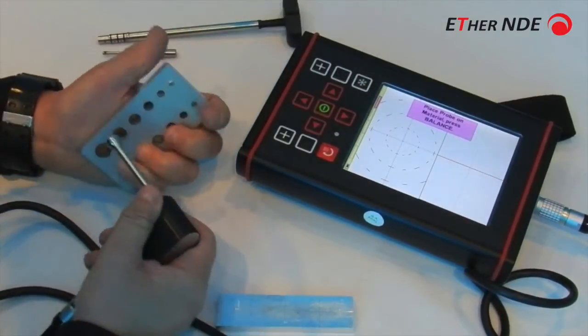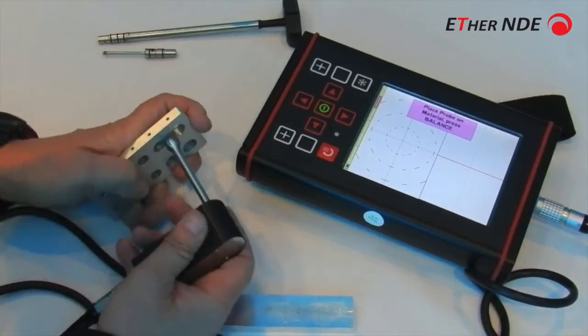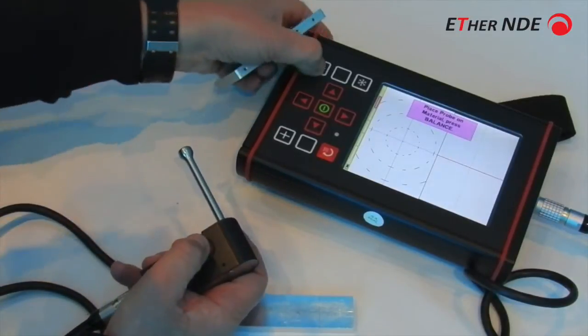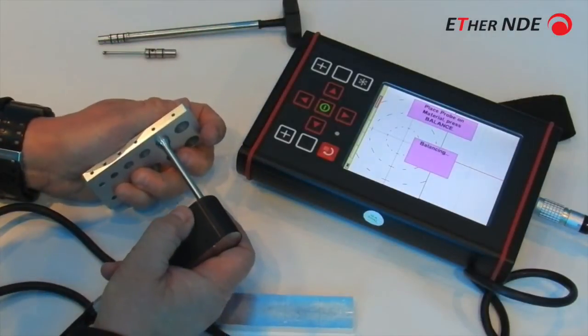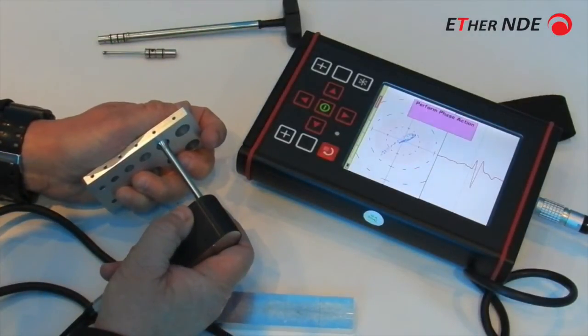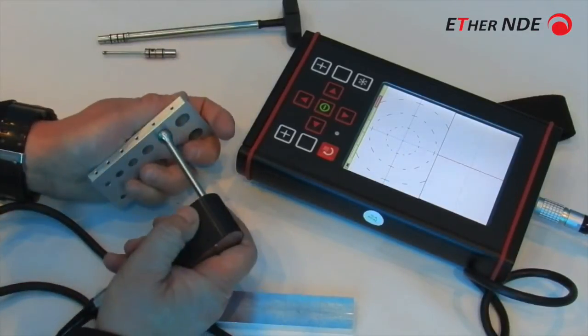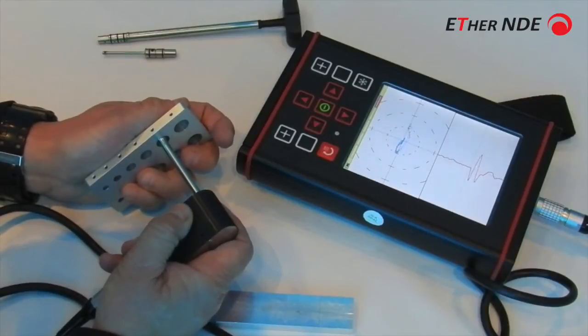So set the auto phase to 25% of the screen height. Activate the function. Go to the sample of the hole in it. Press balance. And now it's set the phase vertically. So that's the hole. That's an awful lot easier than doing a manual inspection.